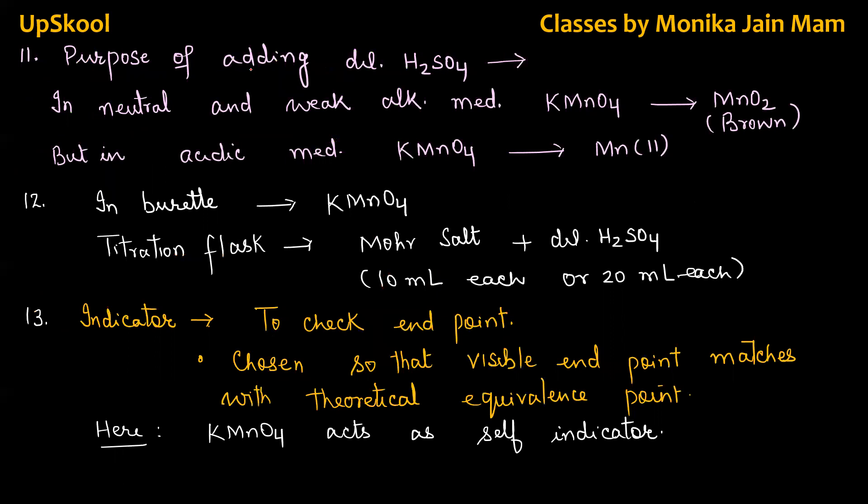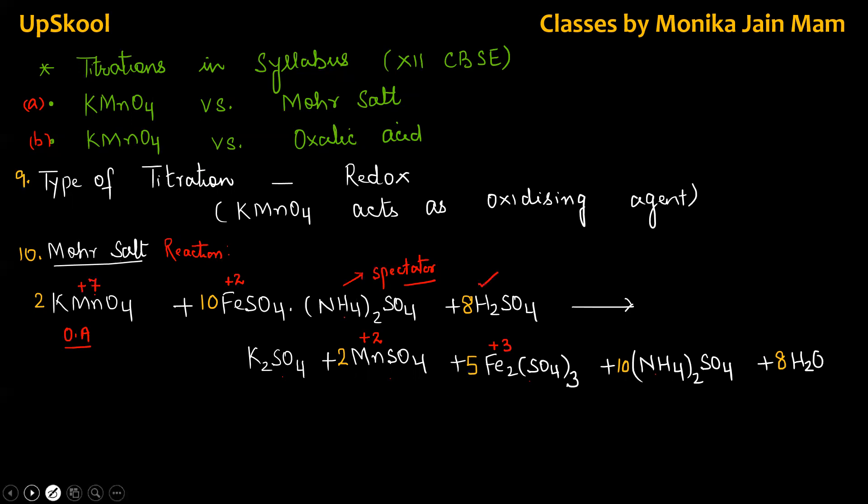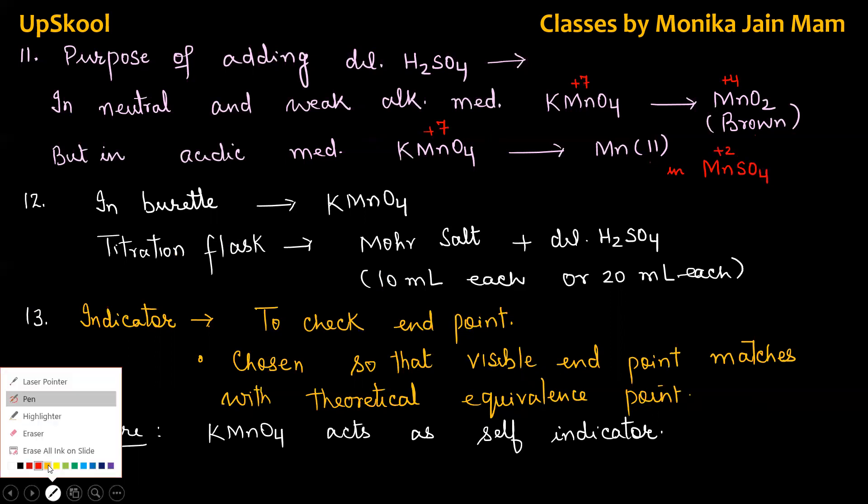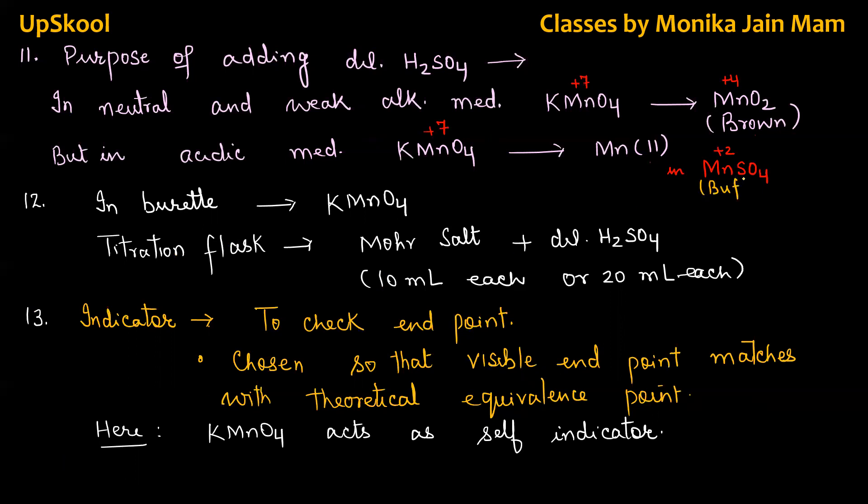What is purpose of adding dilute sulfuric acid during titration? In neutral and weak alkaline medium, potassium permanganate gets reduced from plus seven oxidation state to plus four but its color is brown. But in acidic medium, plus seven to manganese two, in manganese sulfate, oxidation state of manganese is plus two and its color is buff color, very light color. So here end point can be detected quite easily. That's why we are adding dilute sulfuric acid, a very important question for viva also.